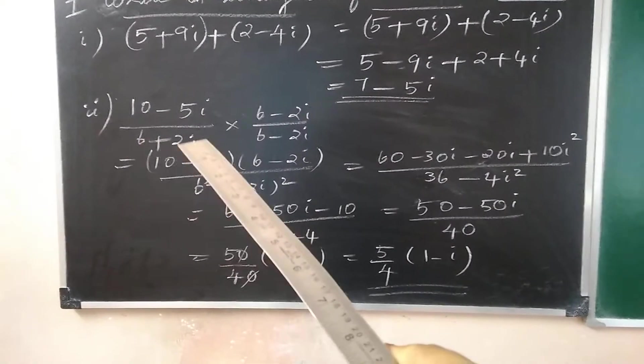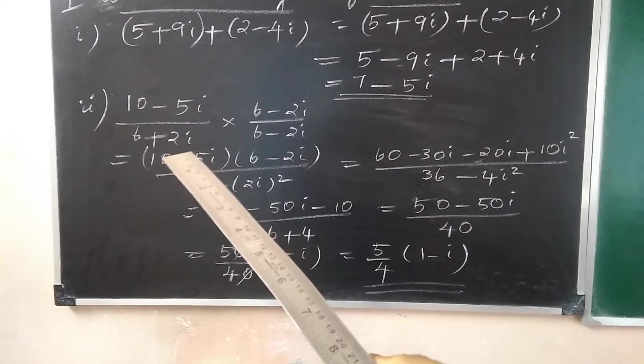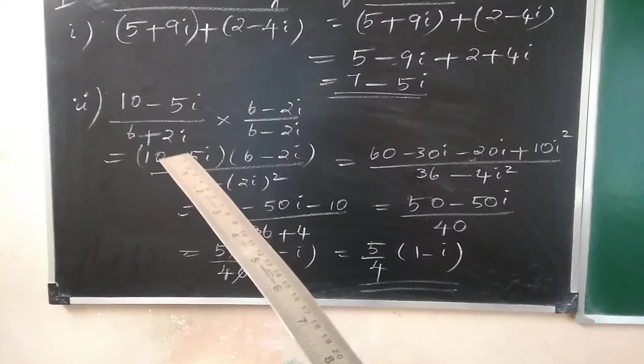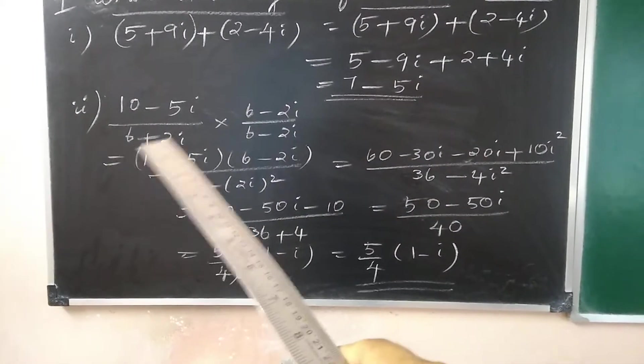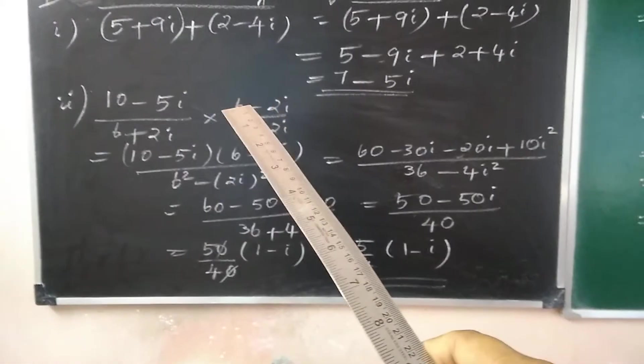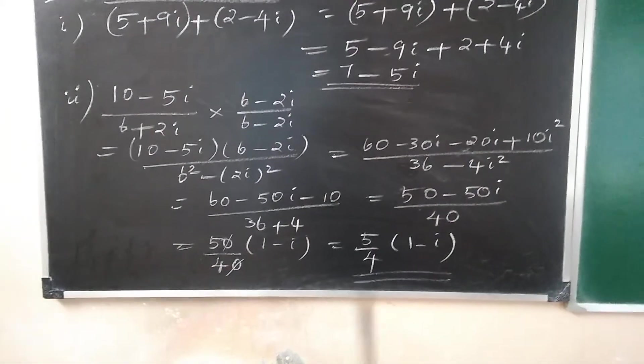When you have a complex number in the quotient, when the denominator is a complex number, we have to rearrange it by multiplying and dividing by the conjugate of the denominator. We multiply and divide by 6 minus 2i.